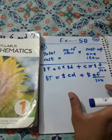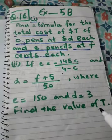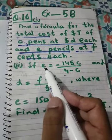Now the first part has been finished. Now look at the second part: if E equals 145C over 4 minus C, and D equals F plus 5 over 50, where E equals 150 and D equals 3, find the value of T.